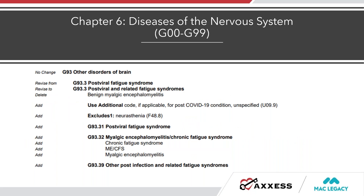Some further Chapter 6 updates: we now have a specific code for chronic fatigue syndrome. Before we were stuck using a code that didn't fully fit. Particularly useful is that if a patient has post-COVID syndrome with chronic fatigue syndrome, we have a code that doesn't fall into the R category — we can use it prior to U09.9.